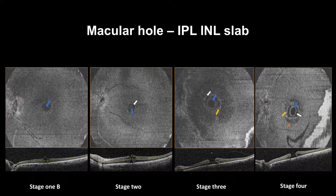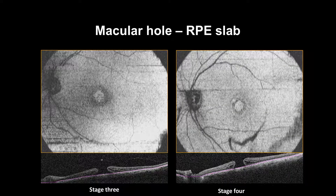Stage 4 may show hyperreflective highlighting. The cystic changes can arrange in a symmetrical petaloid pattern, differentiating it from the pseudo and lamellar hole. Please note the blink and segmentation artifacts. The RPE slab will show projection artifacts and RPE alterations that look like hyperreflective lesions, along with alterations in the form of hyperreflectivity at the level of photoreceptor layers in manually adjusted slabs. Please note the blink and motion artifacts.